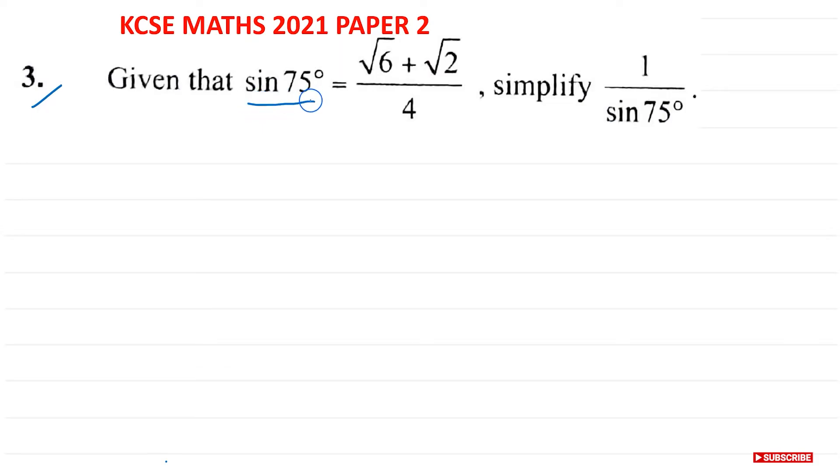We're going to write that as 1 over sine 75 degrees equals, we need to take the reciprocal of this fraction here on the right. So if we do that, then the 4 would become the numerator. So we're going to write that as 4, and the numerator will become the denominator root 6 plus root 2.